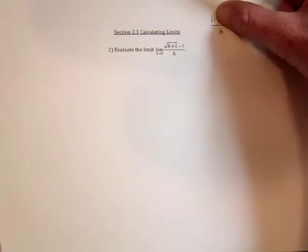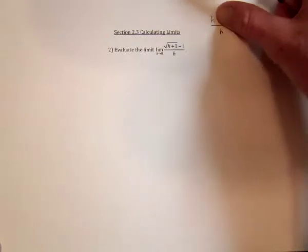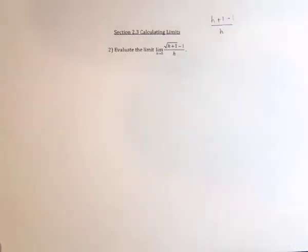So in other words, we could get the problem, which is that h in the denominator, to cancel. So how can we get rid of the square root?